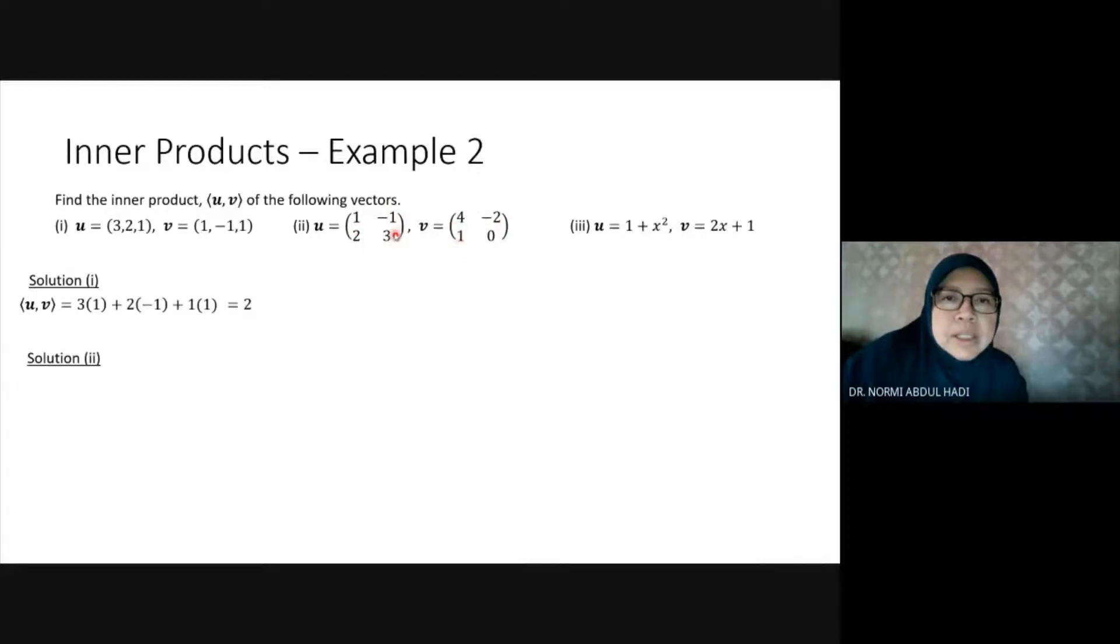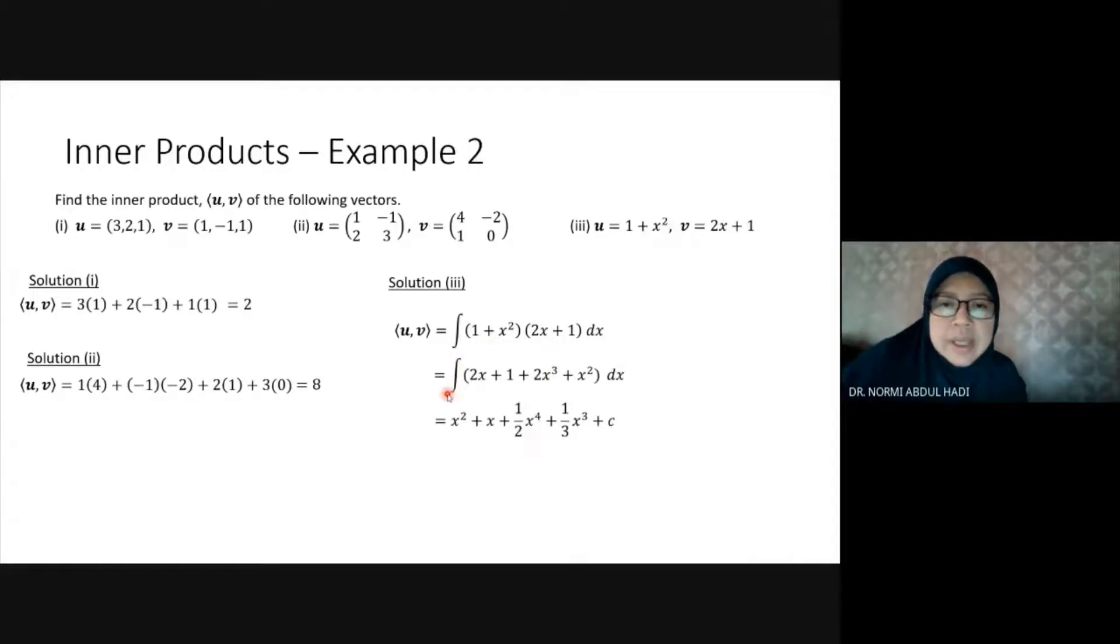Number three is integration - the inner product of uv. Integration of 2x is x²/2, x to the power of 4 over 4, x³/3, plus c.